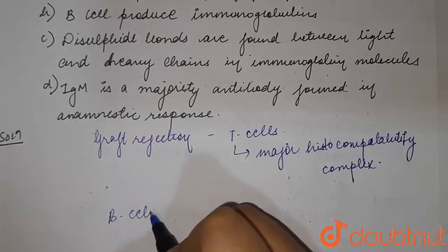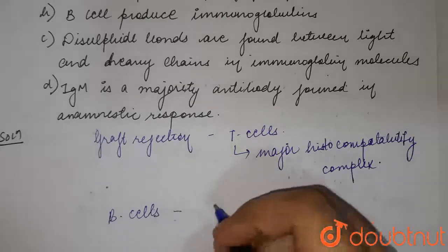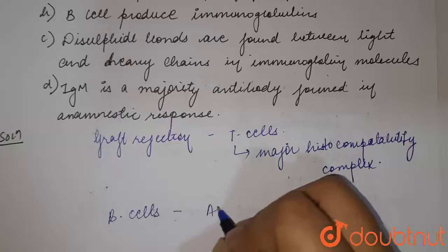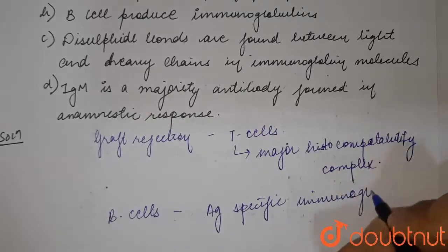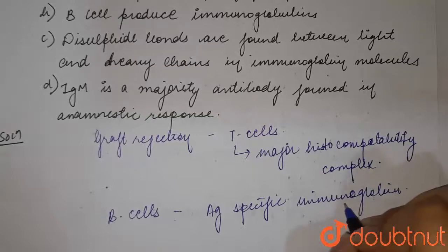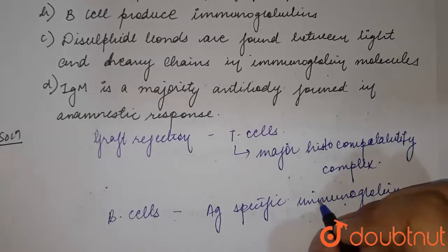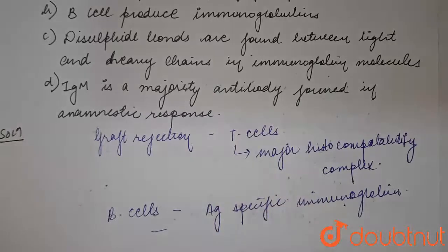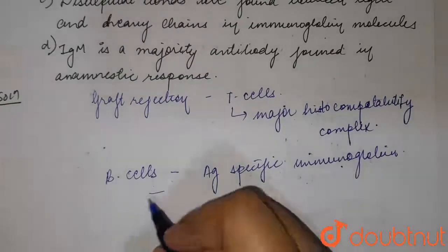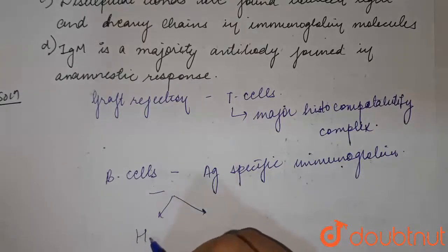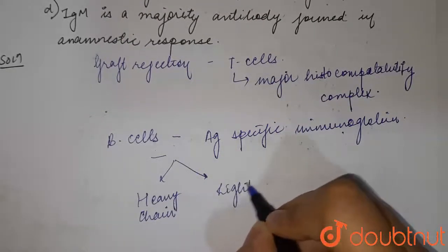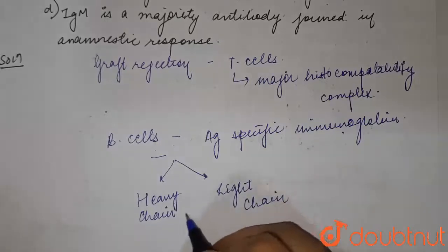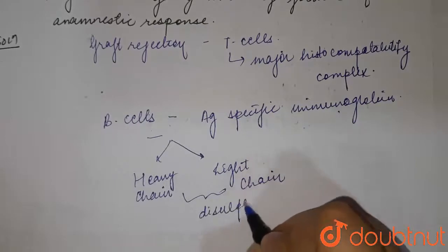B cells are formed by lymphocytes and their major task is the production of antigen-specific immunoglobins, which function as antibodies. These immunoglobins are proteins secreted by B cells, and they assemble to form identical pairs of heavy and light chains. These heavy and light chains are connected to each other with the help of disulfide bonds.